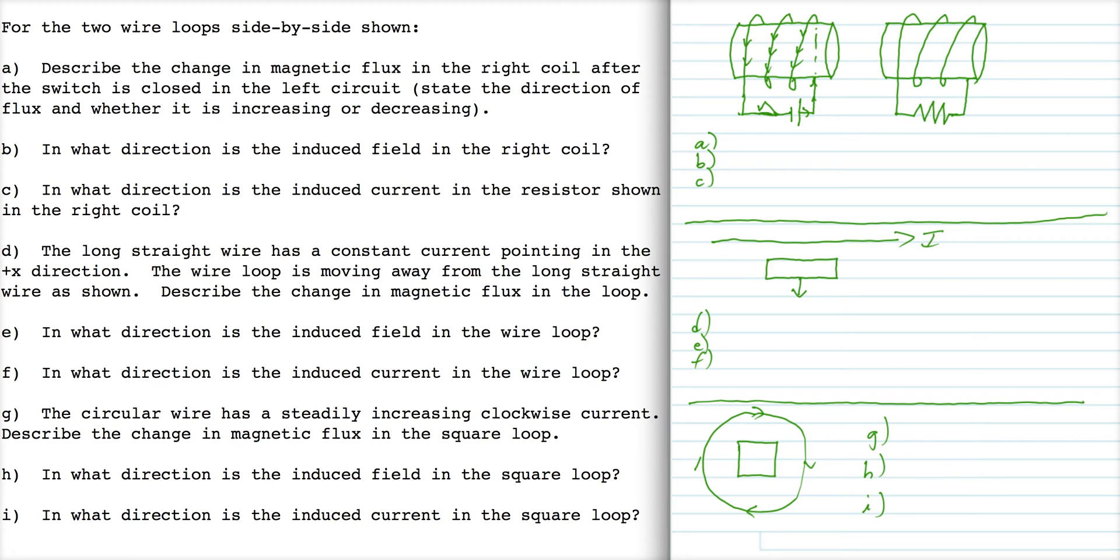The right-hand rule tells us that the resulting magnetic field points in this direction. When we look at this coil over here, we find that it now has phi sub B pointing to the right and it's increasing. That's part A: describe the change in the magnetic flux in the coil on the right-hand side.